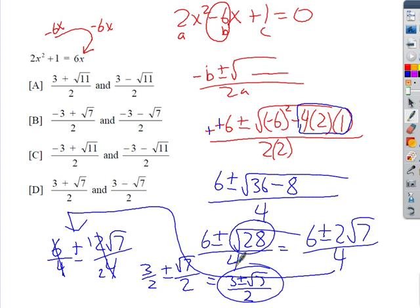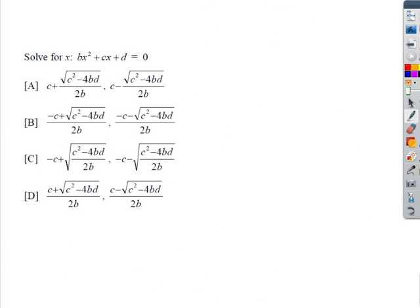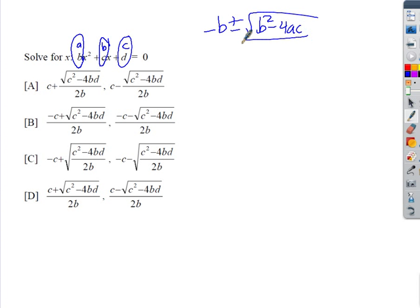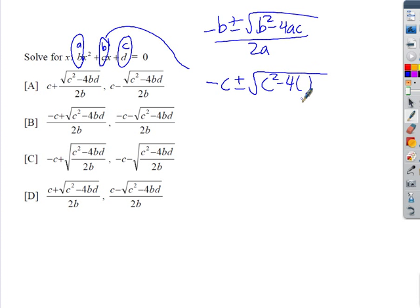One more example. This one uses variables instead of numbers — the equation is Bx² + Cx + D = 0. They're testing whether you understand how to plug values into the quadratic formula. It can be a little confusing because the equation uses B, C, and D as variable names instead of the usual A, B, C. The formula is (−b ± √(b²−4ac)) / 2a, where a=B, b=C, c=D.